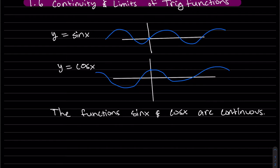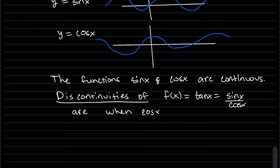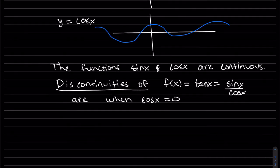And then the other functions, the other four functions, the discontinuities, for example f(x) = tan = sin(x)/cos(x), are when the denominator is zero, just like our rational functions. So let's write them out.